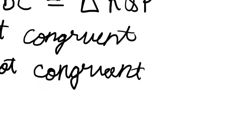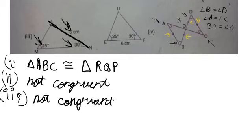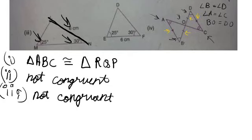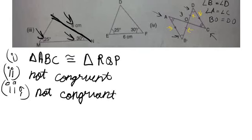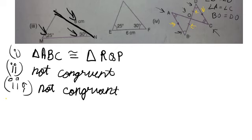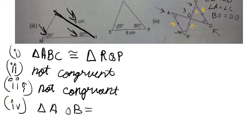We write the congruency statement in proper sequence: Triangle AOB is congruent to Triangle COD. Remember, the sequence must be correct so that corresponding sides match. That's all for today — if you are new to my channel, don't forget to subscribe and leave a like. Take good care of yourselves, bye bye!